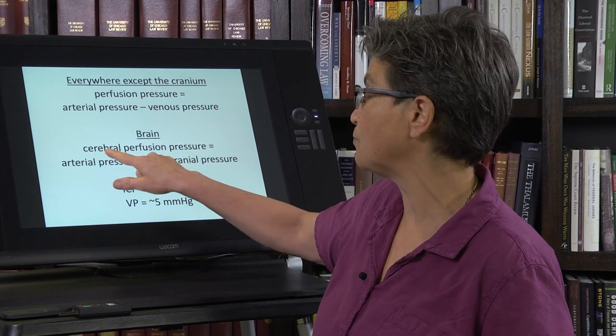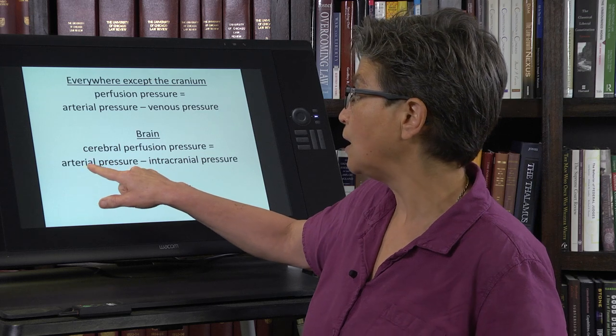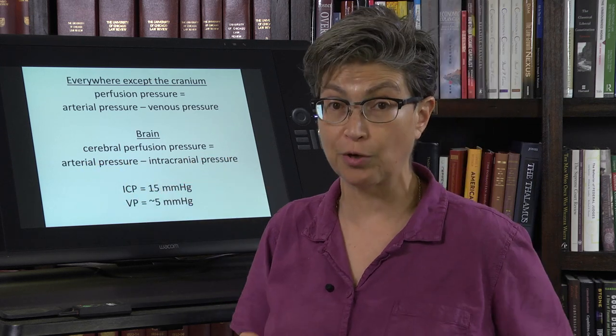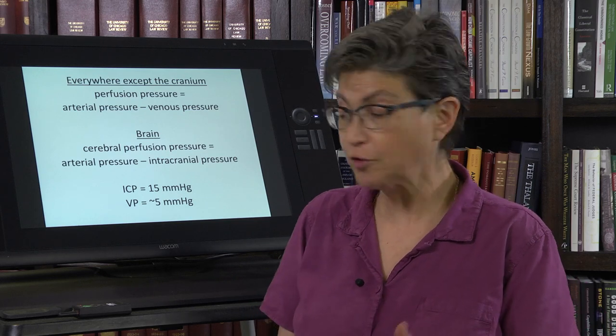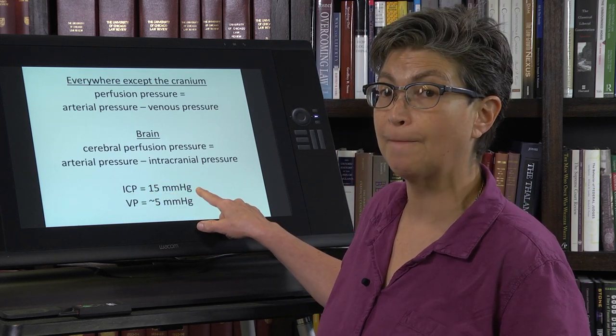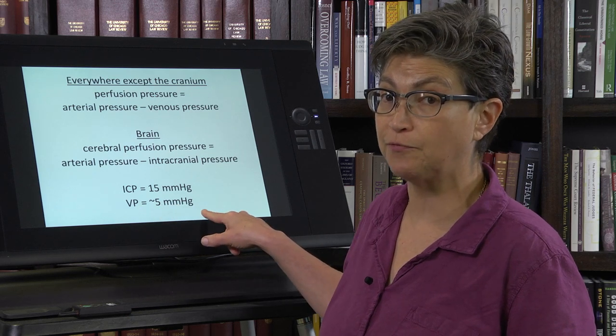But in the brain, its perfusion pressure is equal to arterial pressure minus intracranial pressure. Why is there a difference? Because intracranial pressure is about 15 millimeters, rather than the 5 millimeters of venous pressure.